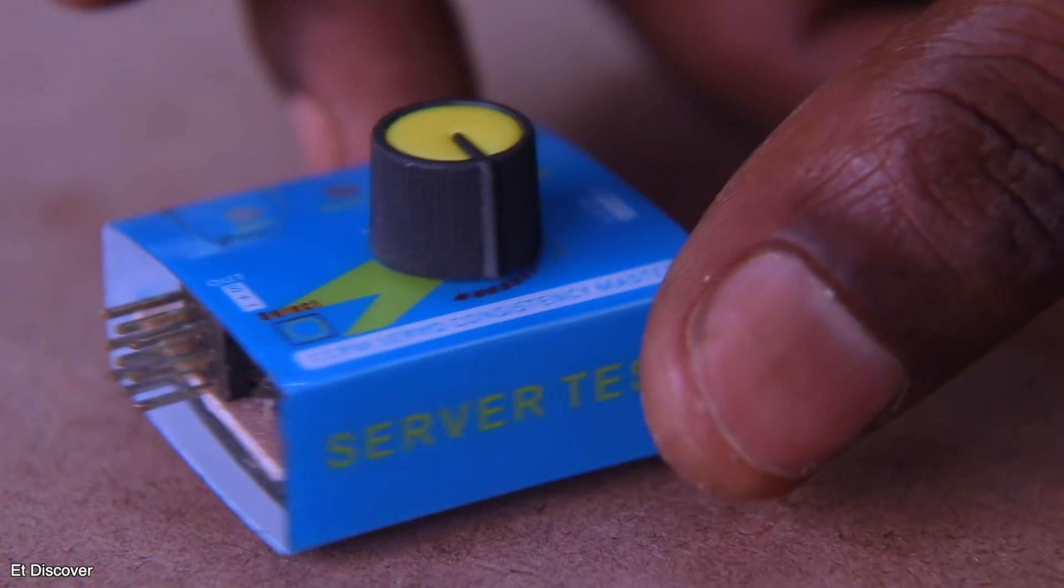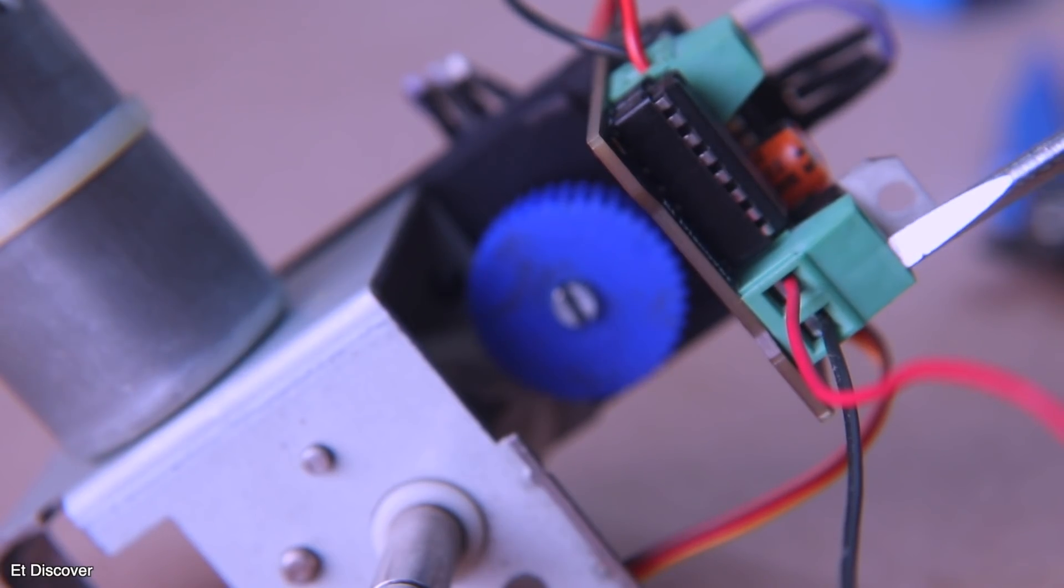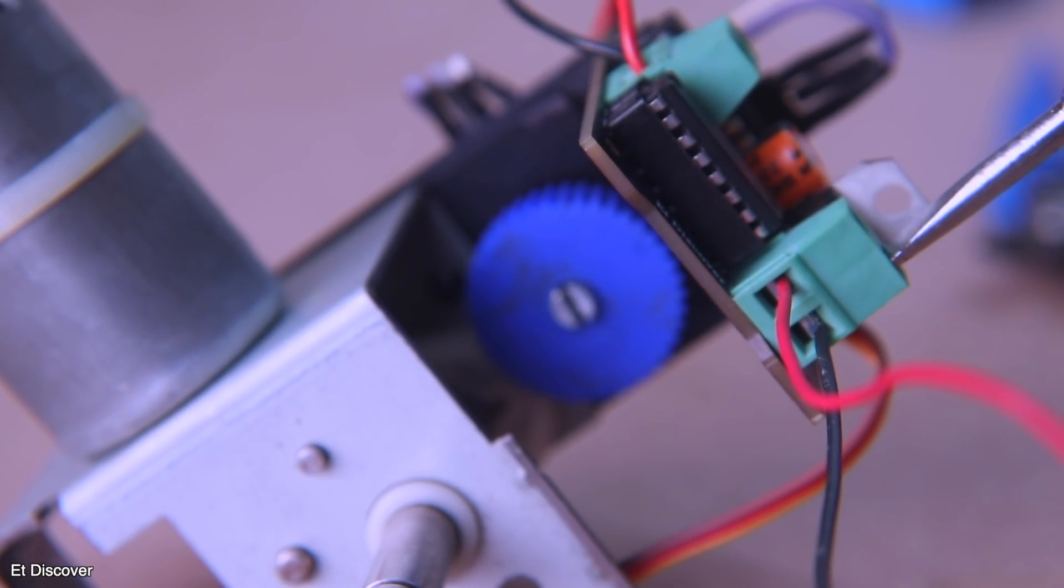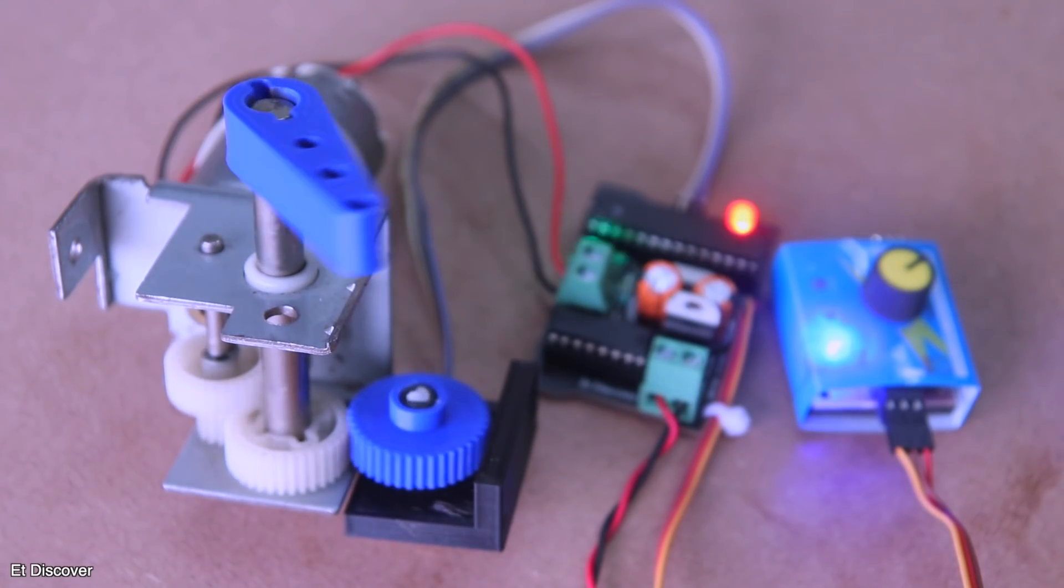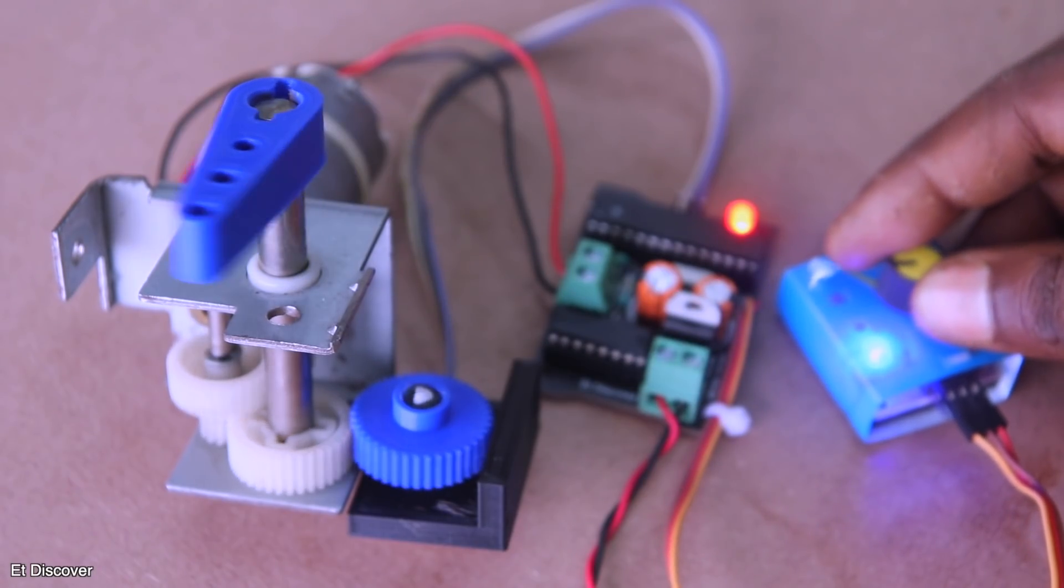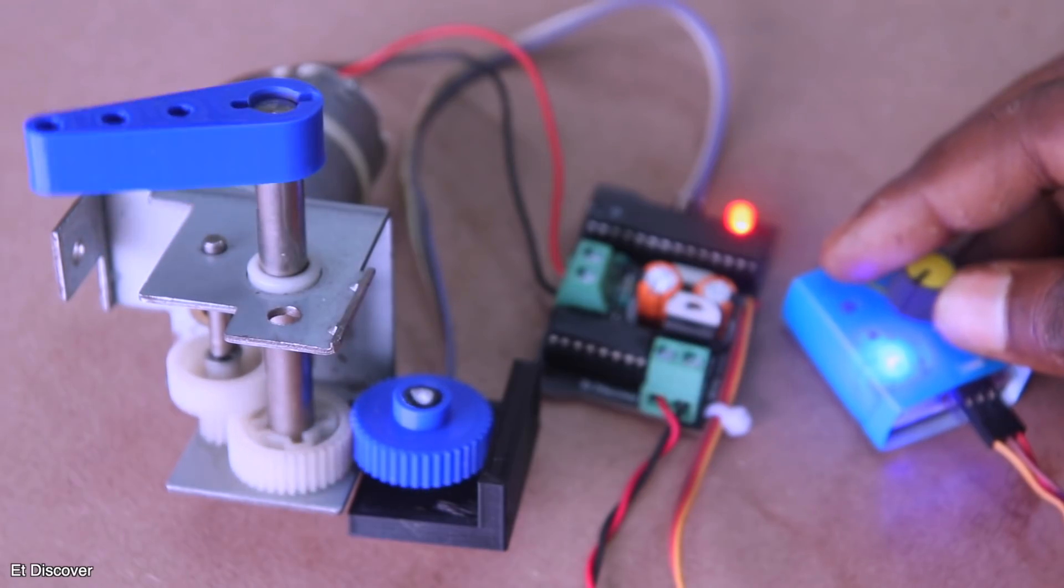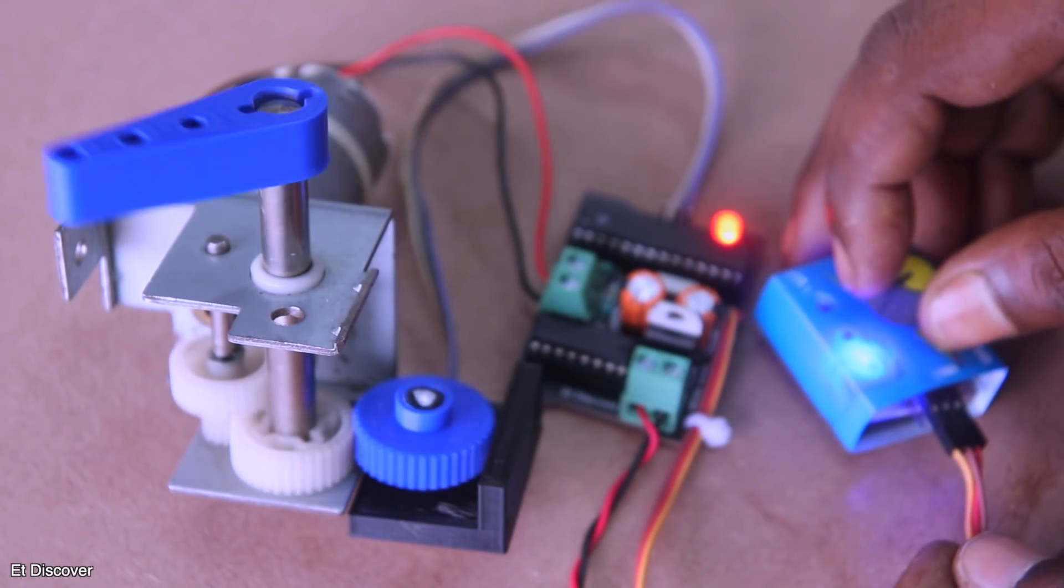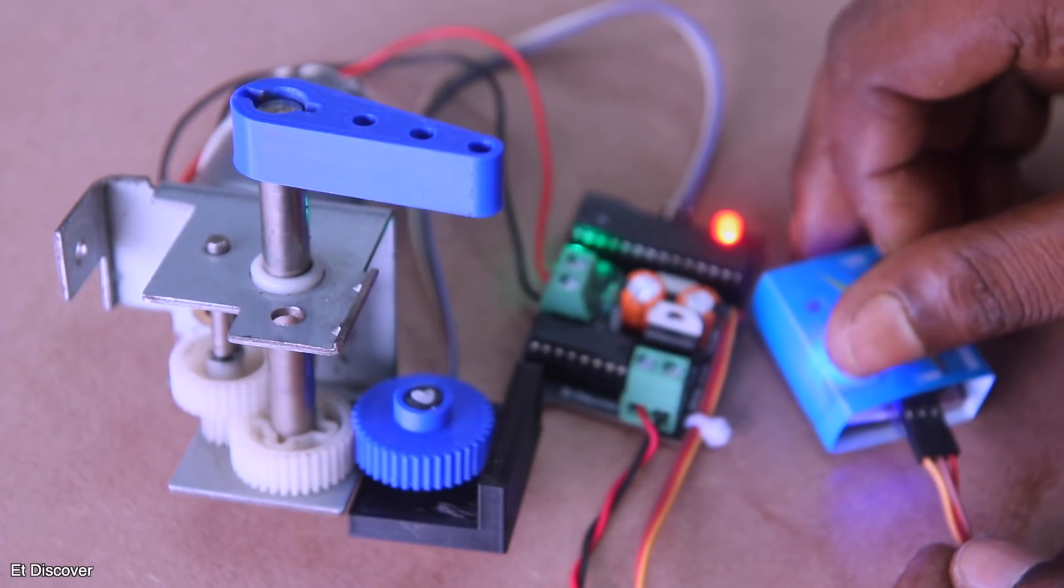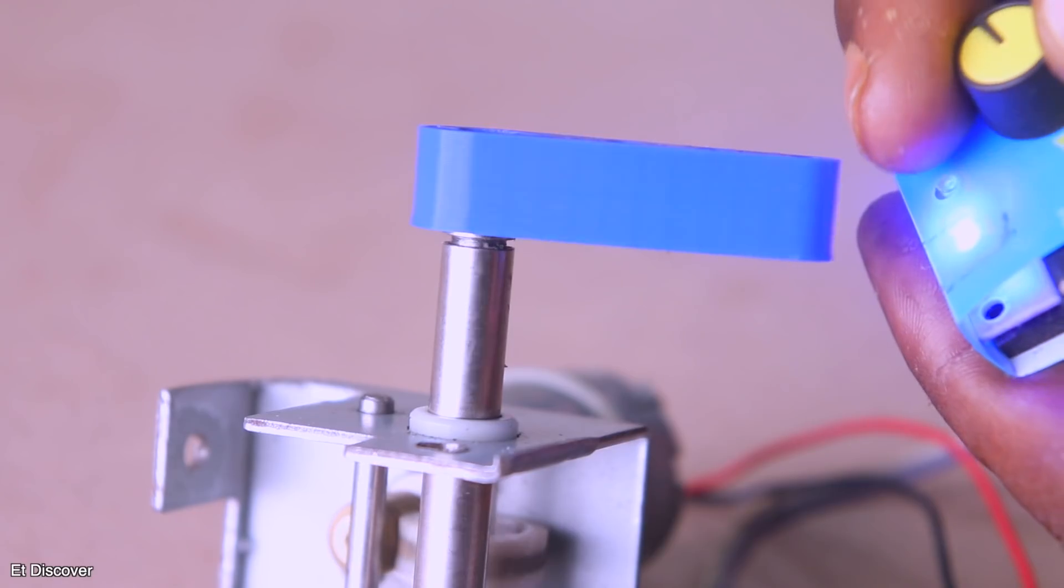Next, to control the servo motor, I will use a servo tester. Then I will connect DC 12V to this servo board and connect the input signal to the servo tester. And see, my servo is turned on. Now whenever I turn the potentiometer of my servo tester, see my servo horn is rotated at the right angle. That means my servo is working properly without any problem with good accuracy. And hopefully you can understand my servo motor is working like a commercial one.